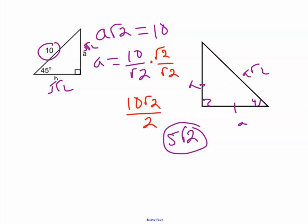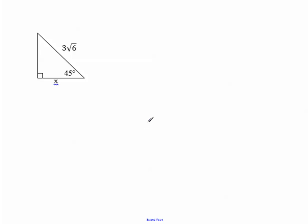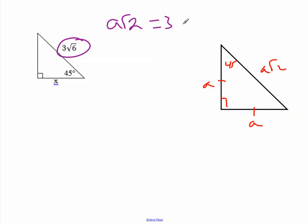Alright, do I have another example? Yes, I do. So back to our definition. I'm going to show you this definition every single time. So again, I have my isosceles right, 45. And I have A, A, A radical 2. I'm just going to set this equal to what it corresponds over here. So my equation is A radical 2 is equal to 3 radical 6.